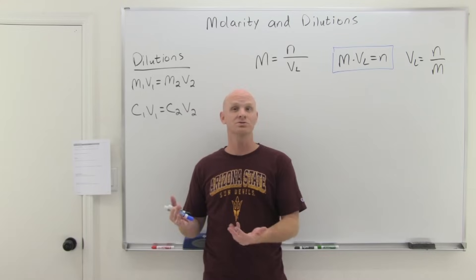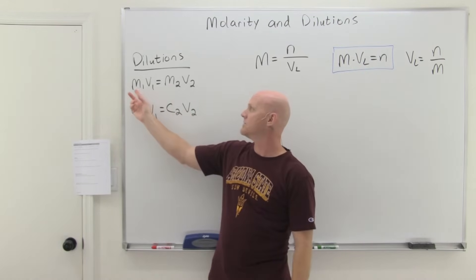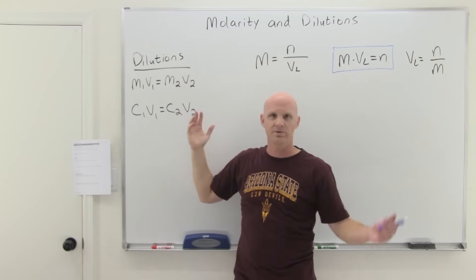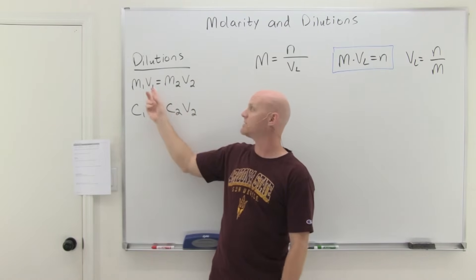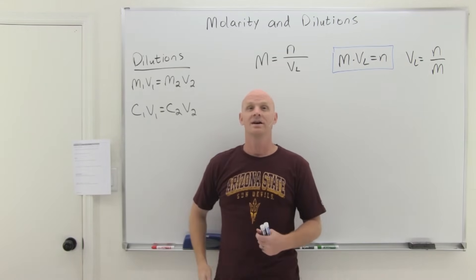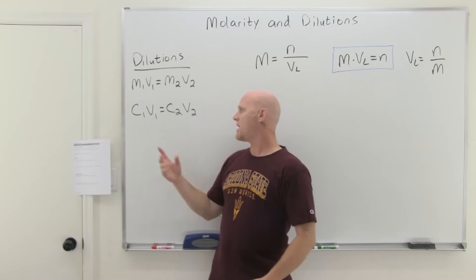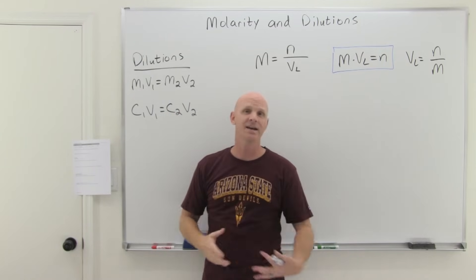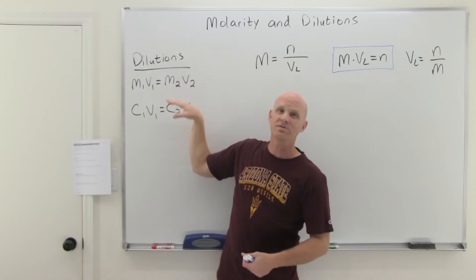Since moles of solute = molarity × volume in liters, and the moles don't change during a dilution, we get: M1 × V1 = M2 × V2, which just says the initial moles equals the final moles. It turns out you don't have to use liters specifically — as long as you use the same unit of volume on both sides, it cancels out. You can also write this more generically as C1V1 = C2V2, where C stands for concentration in any units (percent concentration, molality, etc.). The key is you must use the same concentration units on both sides.